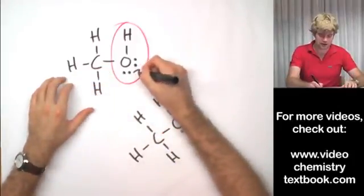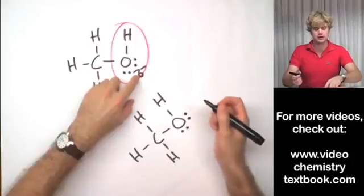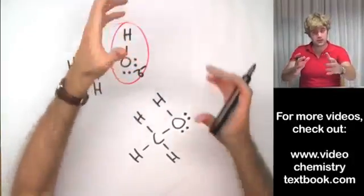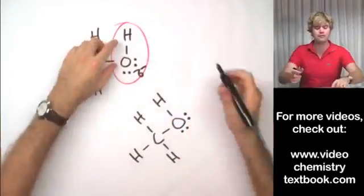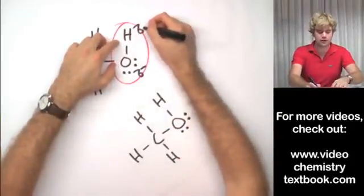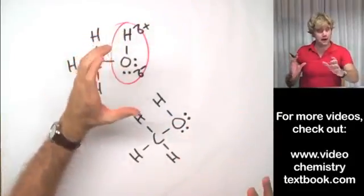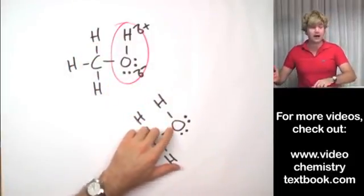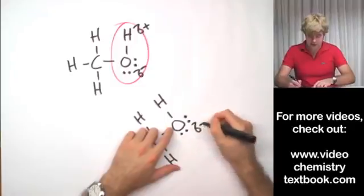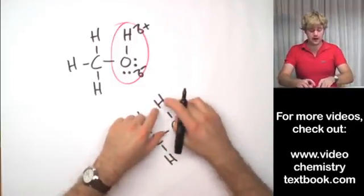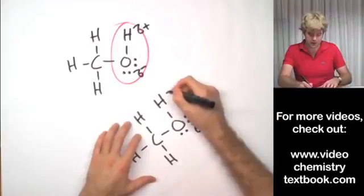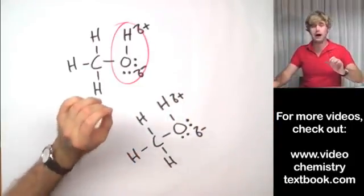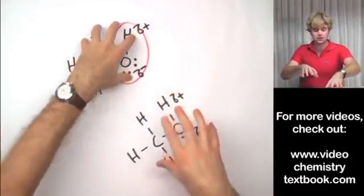And so we can show that little bit of a negative charge with this lower case delta sign with a negative. And since it's hogging the electrons away from the hydrogen, the hydrogen gets a little bit of a positive charge. And the same thing happens on this molecule down here. The oxygen is hogging so it gets a little bit of a negative charge and the hydrogen is getting the electrons stolen away from it so it gets a little bit of a positive charge.